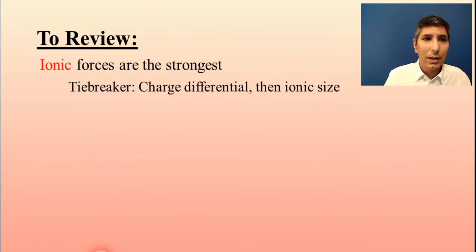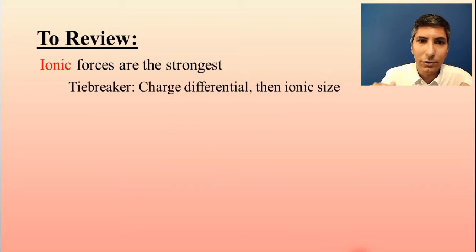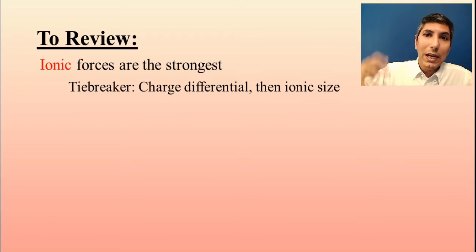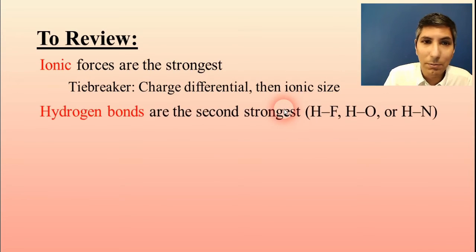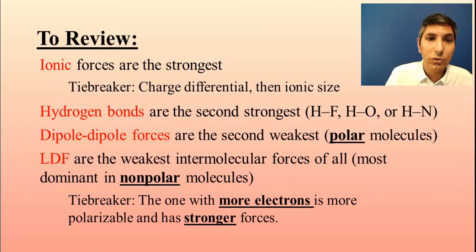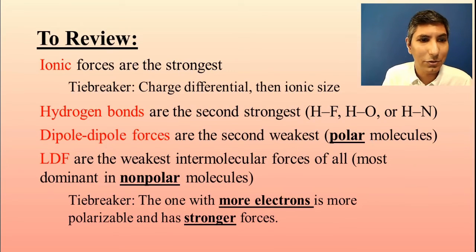To review: ionic forces are the strongest. When ranking them, use the strategies from unit two — think about charge: a 2+/2− pair has a stronger attraction than 1+/1−. If it's a tie, think about ionic size: larger ions are more weakly attracted than smaller ions. Hydrogen bonds are the second strongest, then dipole-dipole after that, and London dispersion forces are the weakest generally speaking. If it's a tiebreaker, the one with more electrons is more polarizable and will have stronger London dispersion forces.